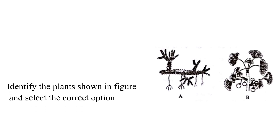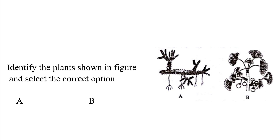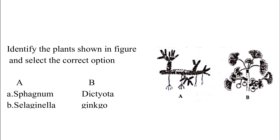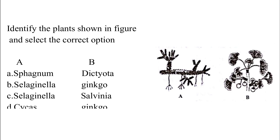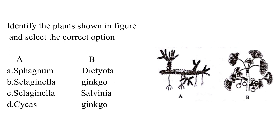Identify the plant shown in the figure and select the correct option. Option A: Sphagnum and Dicteota. Option B: Selaginella and Jingo. Option C: Selaginella and Salvinia. Option D: Cycas and Jingo. The correct answer is Option B, which is Selaginella and Jingo.